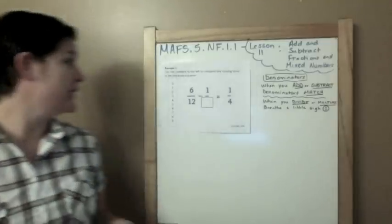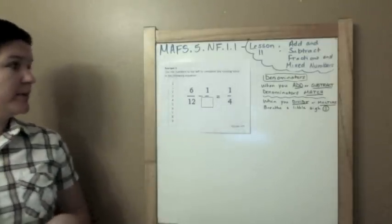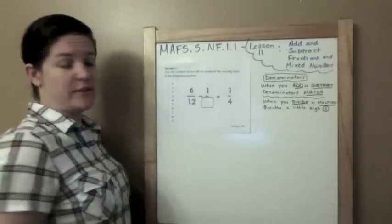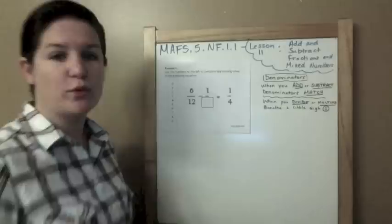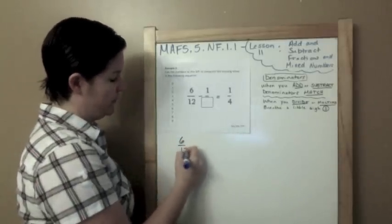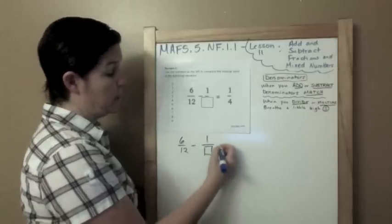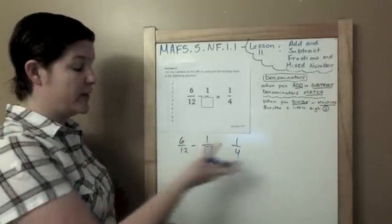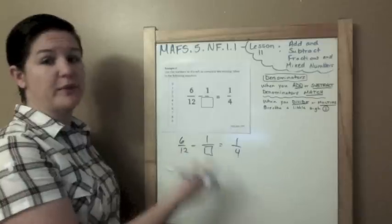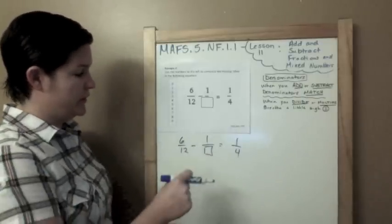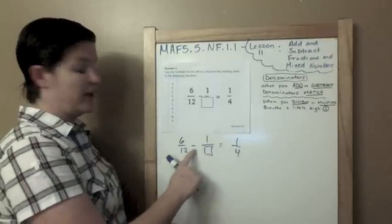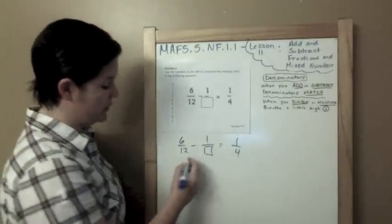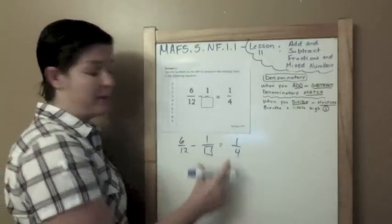Example two. It says, use the numbers to the left to complete the missing value in the equation. All right. So this would be a graphic response item display. This is where you would drag a number and you would put it into the box. But first, we need to solve it out. So I have six twelfths minus one, I don't know, equals one fourth. So this is a very typical FSA type of problem. I've seen a lot where they're missing numbers and you have to be able to plug it in. So first we need to make sure we are subtracting here, which means that my denominators must match. When you add or subtract, denominators match. So right now, these two denominators do not match. I'm going to make sure that they do.